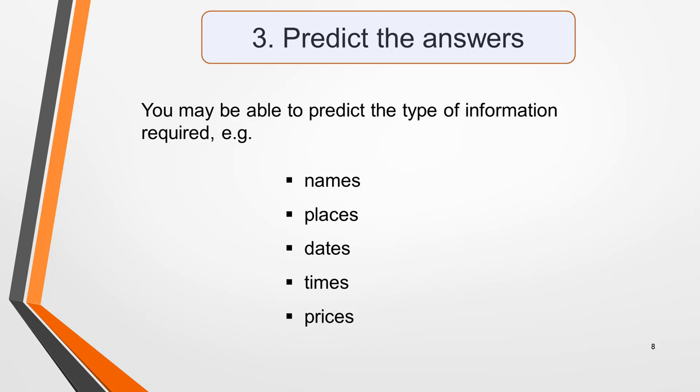Also try to predict the answers. The information in the column headings as well as the rest of the table will enable you to predict what the answers might be before you listen to the recording. Doing this will focus your mind on what to listen out for when the recording plays. Occasionally you'll be able to predict the actual word, but most often it will be the type of information you'll be able to determine. The answers will usually be factual information such as names, places, dates, times and prices. Any clues you can get will help you to understand the recording and identify the information needed.